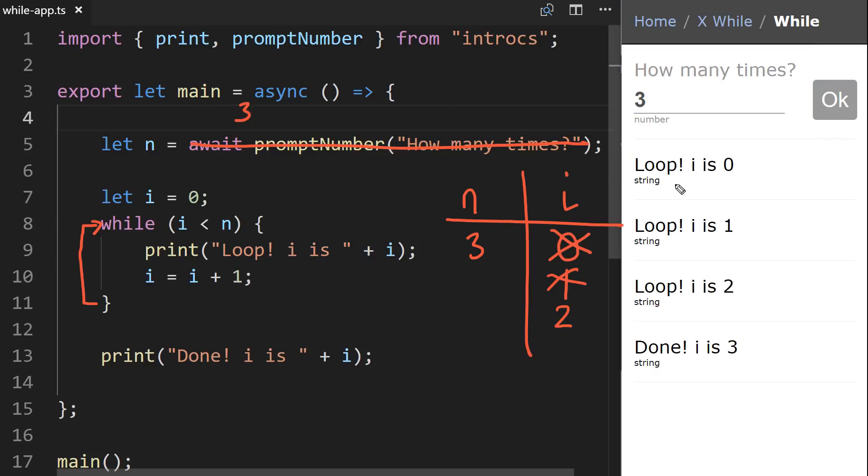And notice we see loop i is 0 is printed out first, i is 1 is printed out second, and where we left off in our program as we were tracing through the state of it was right here. So we reach the end of this while loop, we go back up, and we're testing now i, which is 2, less than n, which is 3. 2 less than 3 is true. So we print loop i is and i is 2. So we expect to see i is 2 printed out, and sure enough, that's what we're seeing right here. And then we increment i one more time. So i has changed to now 3. That happened on this step.